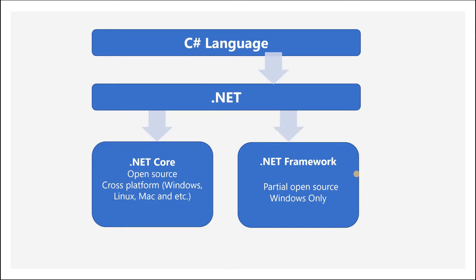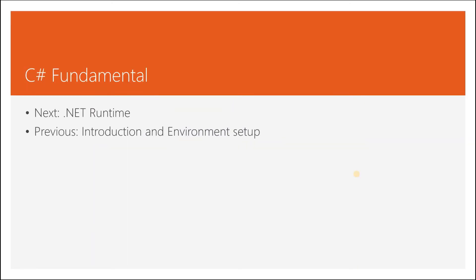.NET Core is quite lightweight, very fast and efficient, so we are picking .NET Core. It has advantages in many areas — we can run the code on any system, and since it is open source, we can also look into what is inside. What is inside .NET and .NET Core and how they work with C# language — we will talk about that in the next clip. Thank you.